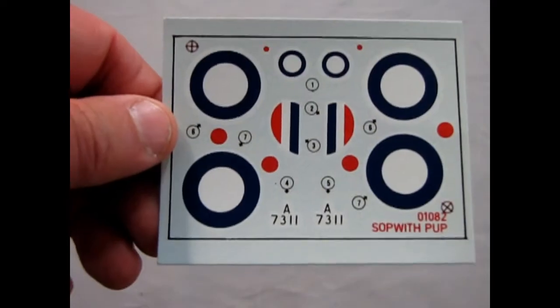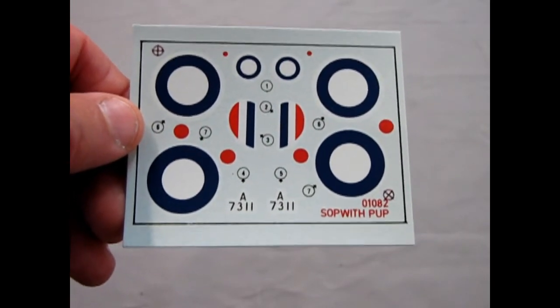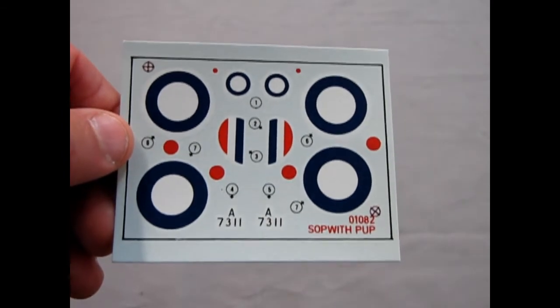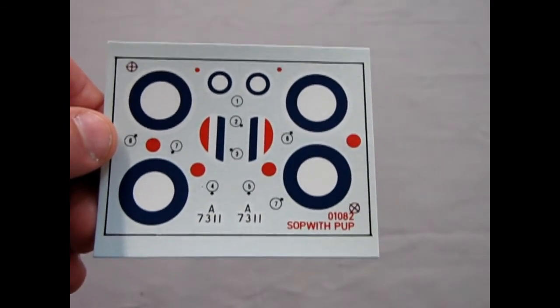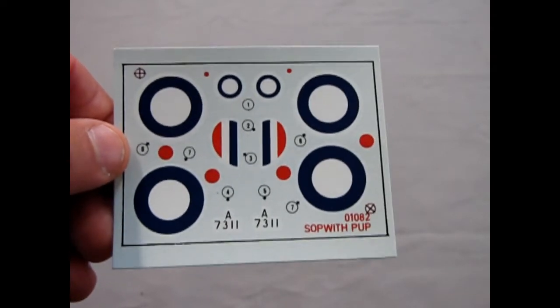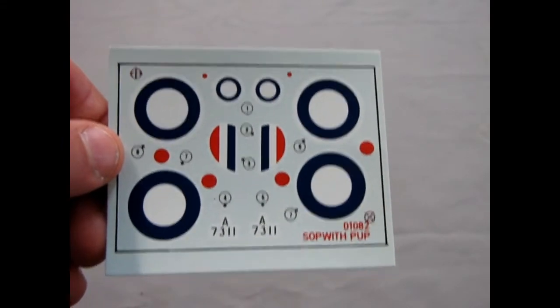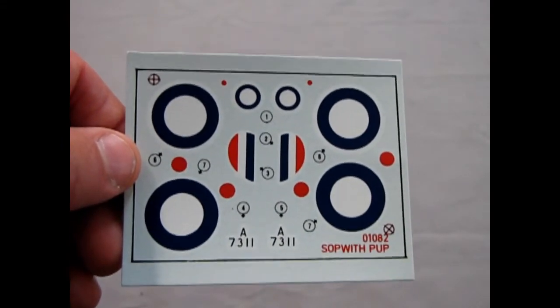I just realized I missed the decal sheet. So much like the other British airplane I just reviewed, this one has the red dots that you must align somehow into the dead center. And it's got of course the British markings for the rear tail fin. So quite nice.